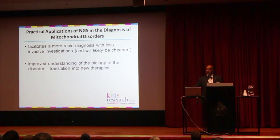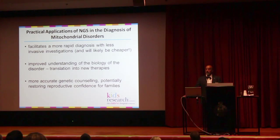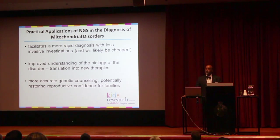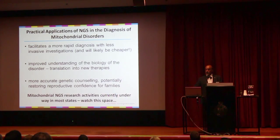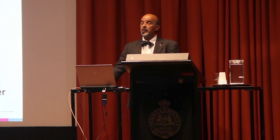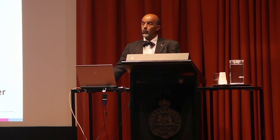That will take time, but right now establishing a genetic diagnosis means we can provide families with much more accurate genetic counseling. This can restore reproductive confidence, because often families who have a child with a mitochondrial disorder are too scared to have another child and stop having children altogether. A number of us around the country are currently researching next-generation sequencing technologies for mitochondrial diseases, and we hope to report our findings within the next year or two.